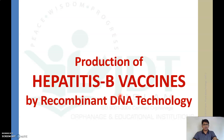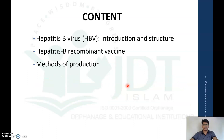In this video we will discuss the production of hepatitis B vaccine by recombinant DNA technology. Topics covered include an introduction to the hepatitis B virus and its structure, an introduction to the hepatitis B recombinant vaccine, and the steps involved in the method of production of the hepatitis B recombinant vaccine.